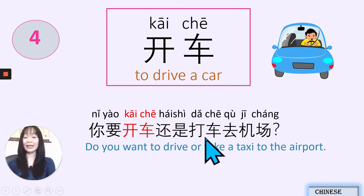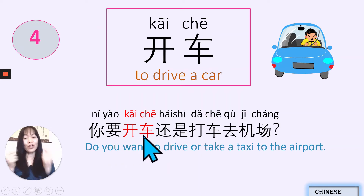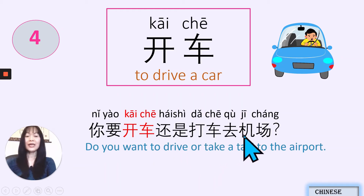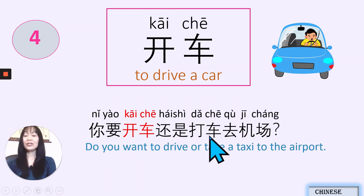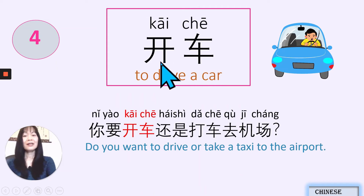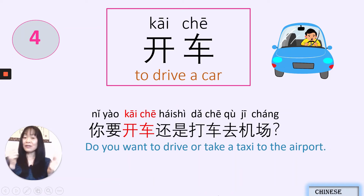你要开车, 还是打车去机场? 要 — want to. 开车 — drive a car. 还是 — or. 打车 — to take a taxi. 去 — to go. 机场 — the airport. Do you want to drive or take a taxi to the airport? 你开车吗? Do you drive?